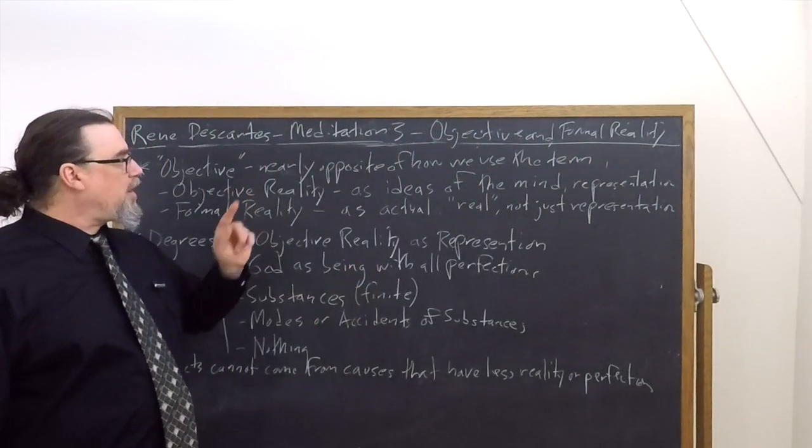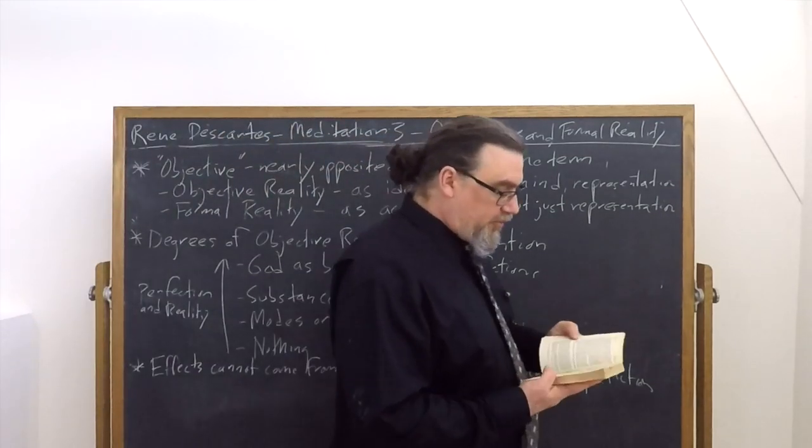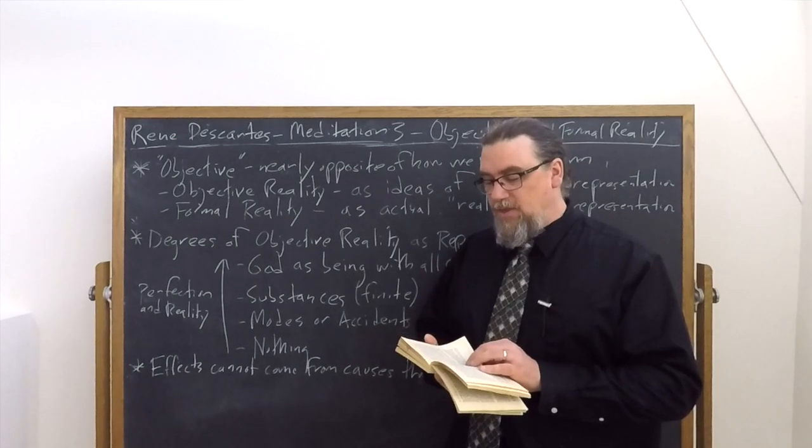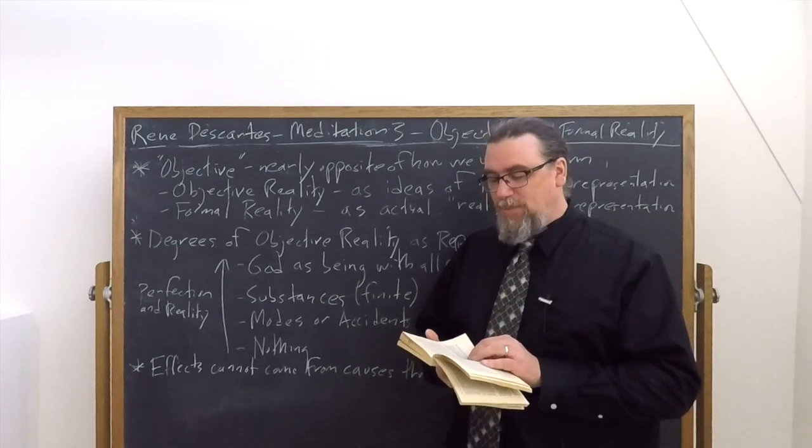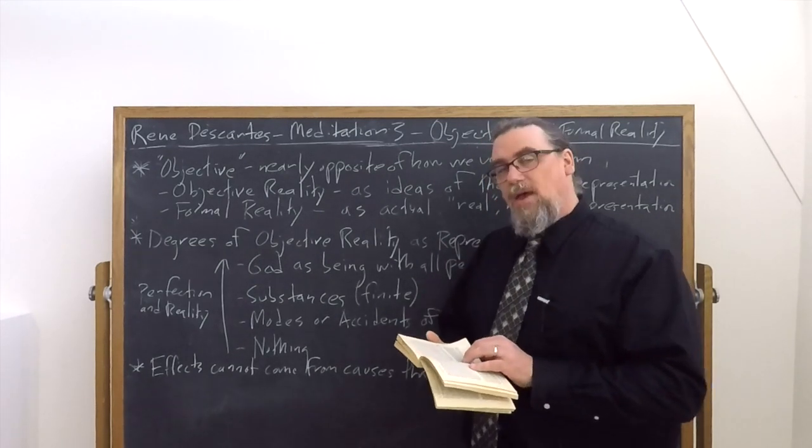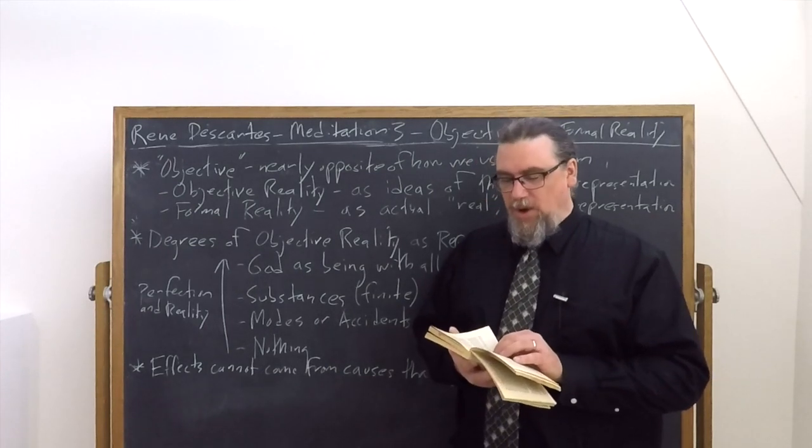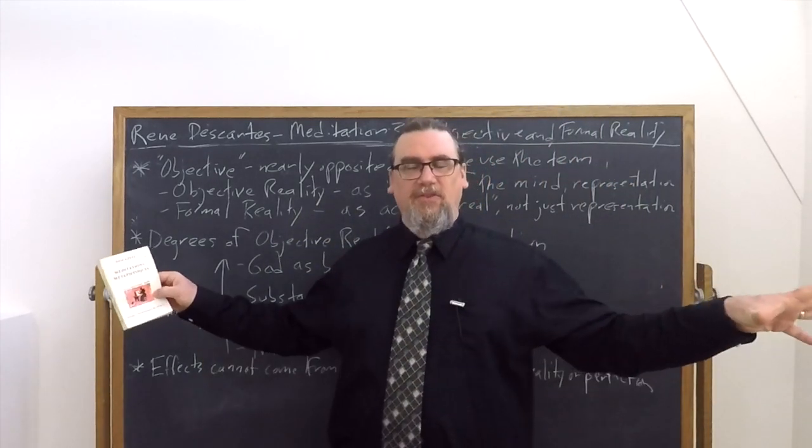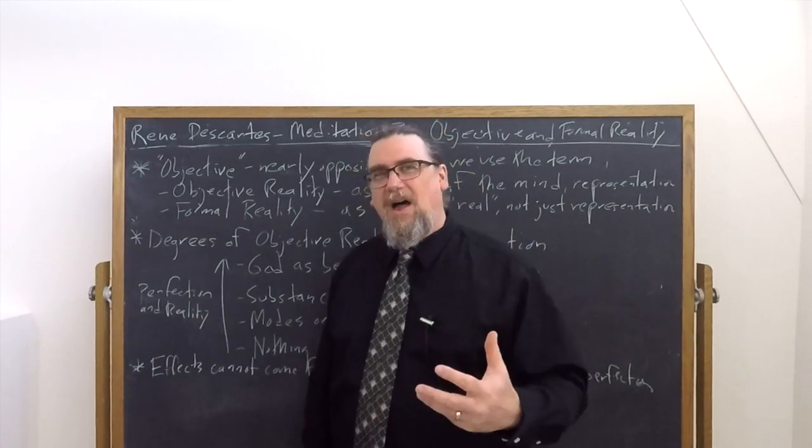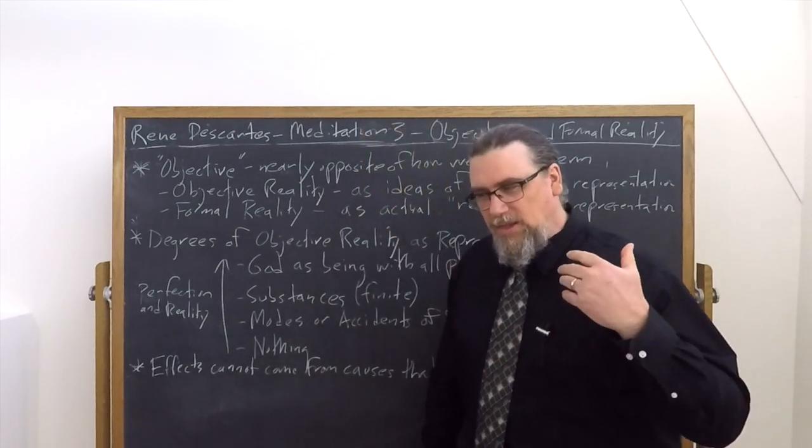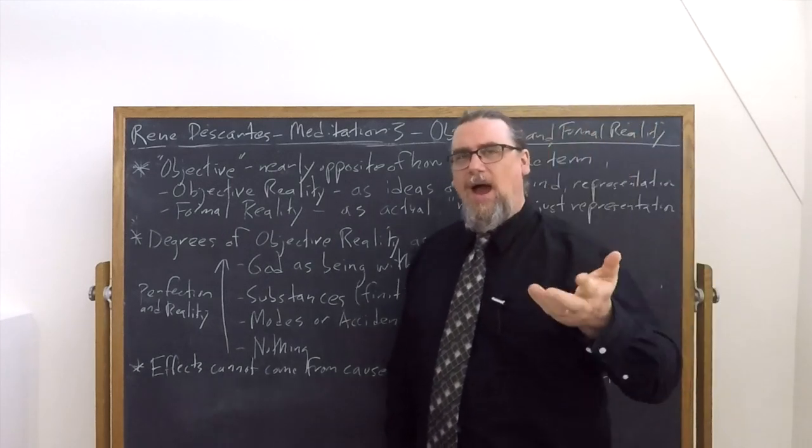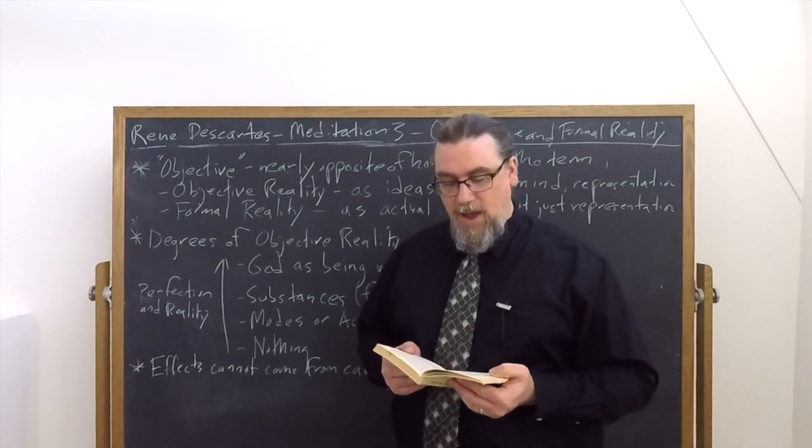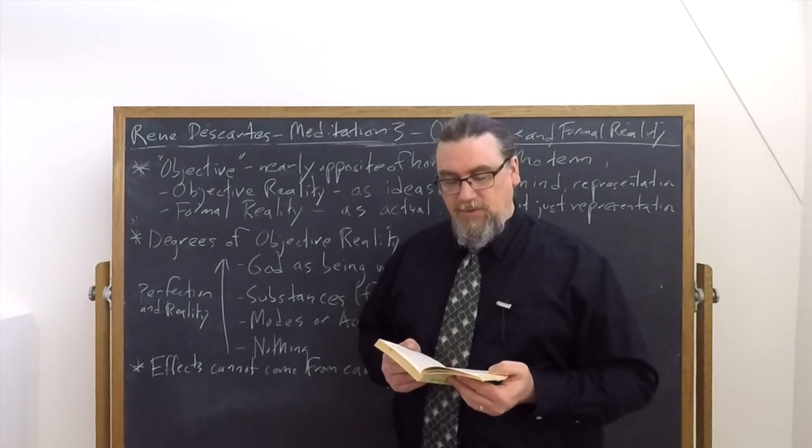So whether we're considering it in terms of objective reality or formal reality, we have, according to Descartes, this sort of hierarchy in place. He goes on and he says, now it's something that's manifest by the natural light, that there has to be at least as much reality in the efficient and total cause than is in its effect. Because where else would it get that reality from other than its cause? Now, when it comes to formal reality, things existing in the world, that's not that hard of a sell for us to accept. There has to be at least as much reality in the cause as there is in the effect, because otherwise, how are you going to get the effect?